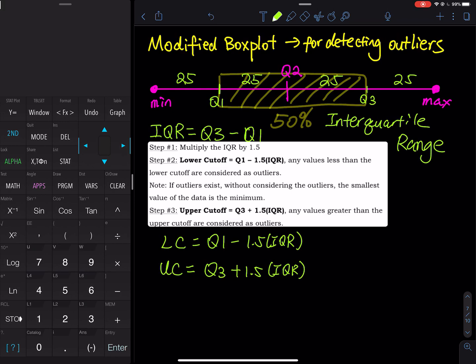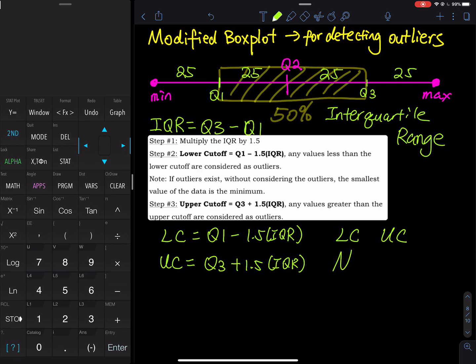But let me tell you that the lower cutoff and the upper cutoff, they are not part of the modified boxplot. So they are not part of the modified boxplot. So that is the concept.